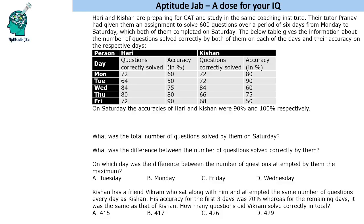Hello everyone, welcome to Aptitude Jab. This is a set based on a data table. There are two students, Hurry and Kishan, preparing for CAT. They have to solve 600 questions over a period of six days from Monday to Saturday, which both of them completed on Saturday. The table gives information about the number of questions solved correctly by both of them on each day.